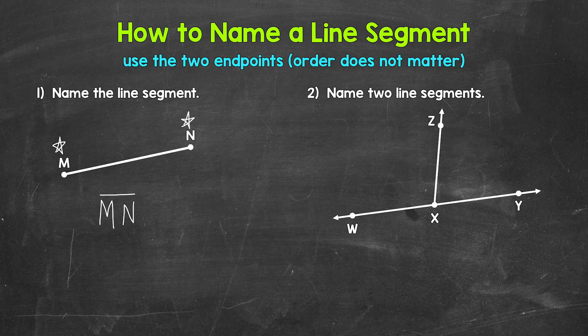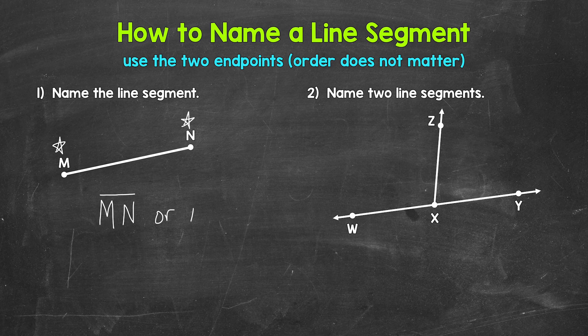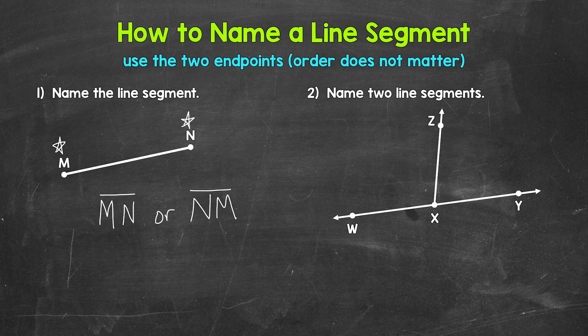And that's the name of this line segment. Line segment M, N. Now when it comes to naming a line segment, order does not matter as far as the endpoints. So we can also write this as line segment N, M. Either way will work. So line segment M, N or line segment N, M.